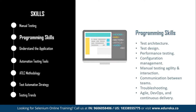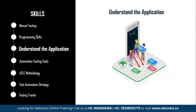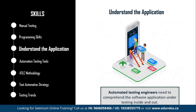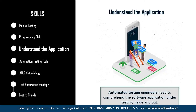Next up is to understand the application. The common application details that every automation tester needs to consider include which programming languages were used to develop the application, on what platform the application is built, which databases are involved, and whether there are any web services or APIs connected to different parts of the system. Make sure you are completely thorough with the application that you are going to test via automation testing.